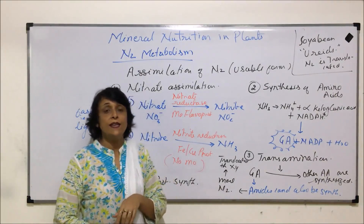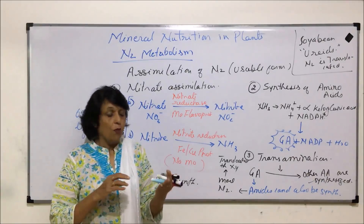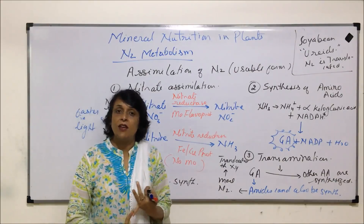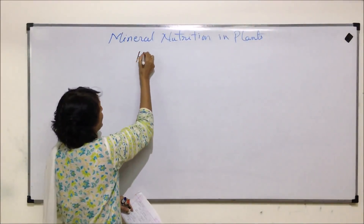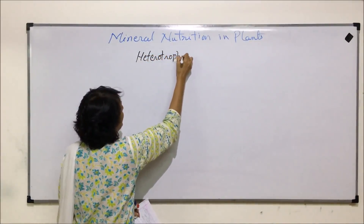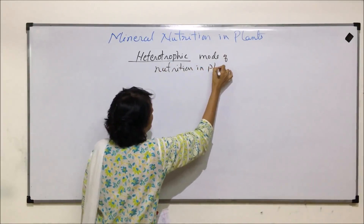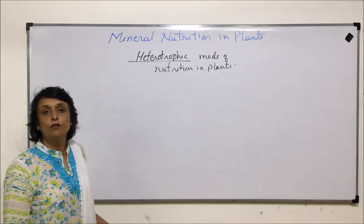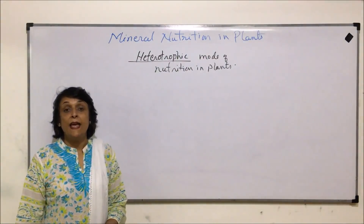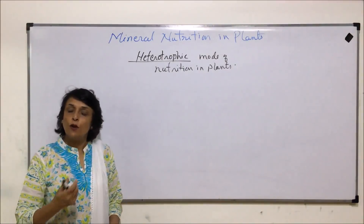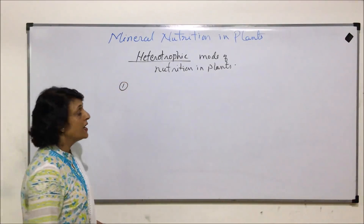Now the last thing which remains in this chapter is heterotrophic mode of nutrition. Certain plants show heterotrophic mode of nutrition - they can be parasitic or insectivorous. Most of the plants are autotrophic and make their own carbohydrates and absorb mineral elements from the soil, but there are certain plants which show a different mode. In this we have three categories. The first is parasitic plants.